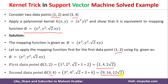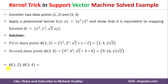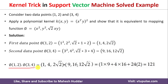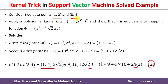Once we have the mapped data, we perform the dot product between the two mapped vectors. That gives us 1×9 + 4×16 + 2√2×12√2, which equals 121. So, starting from data points (1, 2) and (3, 4), we applied the mapping function and then the dot product to obtain 121 — the representation in feature space.